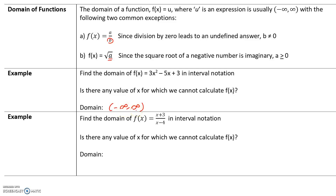Therefore, the domain is all real numbers or negative infinity comma infinity. If we were to graph this, our graph would contain all real numbers. Next, let's find the domain of f(x) equals x plus 3 over x minus 4 in interval notation.